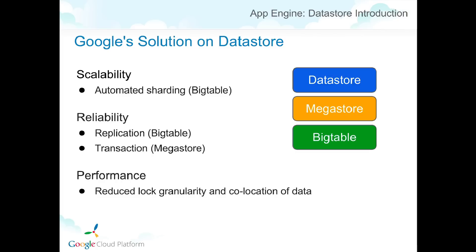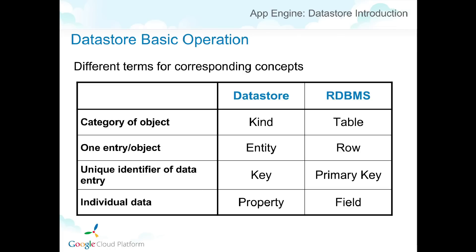Now let's move on to actual usage — the practical part. The Datastore and RDB use different terms for the same concepts. The category of an object — its type — is called a 'kind' in Datastore versus a 'table' in RDB. One entry of data is called an 'entity' instead of a row. The unique identifier is a 'key' in both. And the individual data in an entity is called a 'property' instead of a field in RDB.